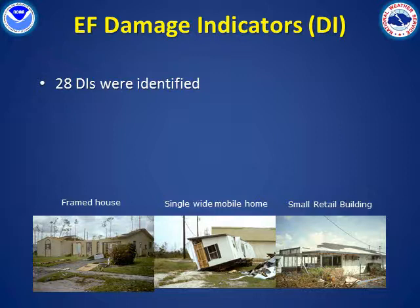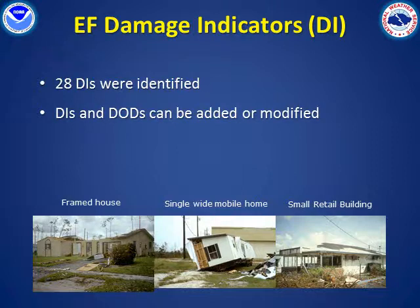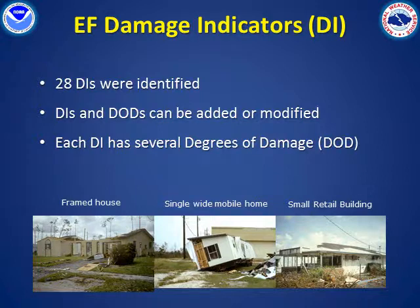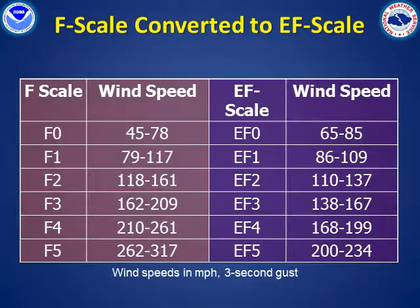Other commercial structures, light poles, power poles, and various trees are also classified as DIs. Additional damage indicators may be added in the future. For each DI, the steering committee decided that the degree of damage, or DOD, should range from the initiation of damage all the way up to complete devastation of the structure. Based on input from the engineering community, the F scale rating wind speed ranges were converted to the new EF scale. In this way, there should be continuity in the way wind damage is rated, regardless of the source.